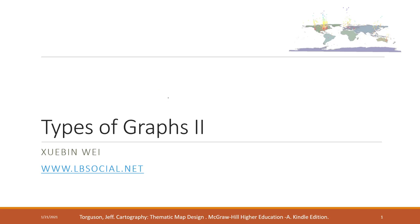This week we will continue talking about different types of graphs. Last week we introduced the most common basic types of graphs. This week we will talk about something a little bit more complicated — a little bit advanced and also not as commonly used as the ones mentioned last week.